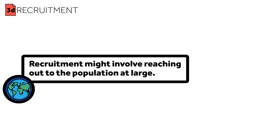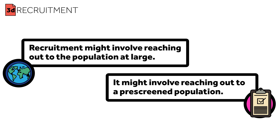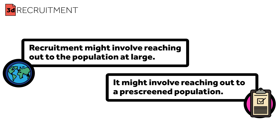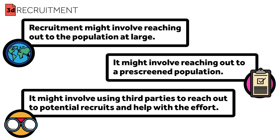There are a number of different approaches for recruiting participants. Recruitment might involve reaching out to the population at large, or to a pre-screened population. It might involve using third parties to reach out to potential recruits and help with the effort. Potential research subjects might be contacted through mailings, phone calls, or in-person recruitment methods. Regardless, it's important to remember that what works one time might not work another.